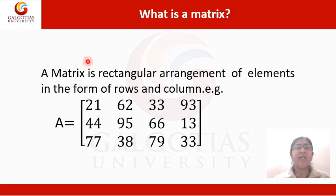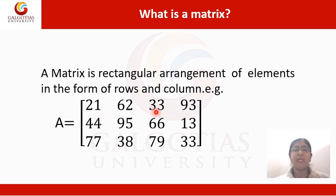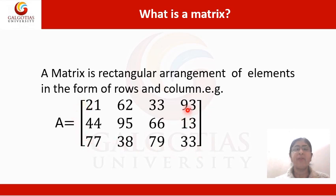What is a matrix? A matrix is a rectangular arrangement of elements in the form of rows and columns. For example, A is equal to [21, 62, 33, 93, 44, 95, 66, 13, 77, 38, 39, 33]. It is the rectangular arrangement because it is the shape of a rectangle.